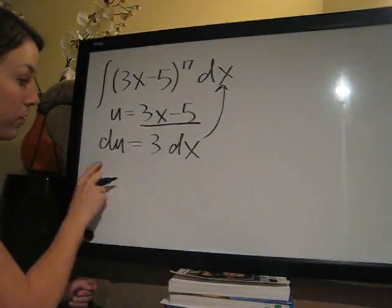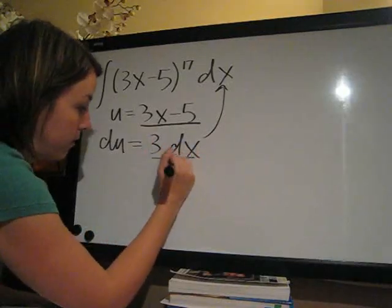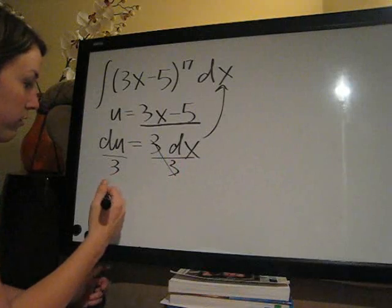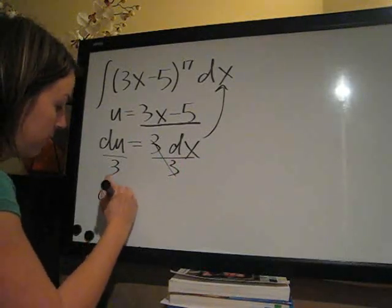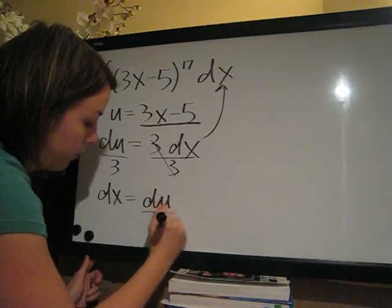So the way we solve this is just dividing both sides by 3. Divide this by 3, divide this by 3. These cancel, of course. So dx equals du over 3.